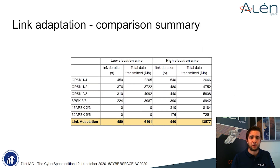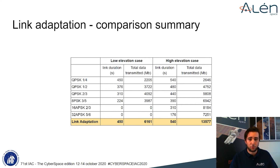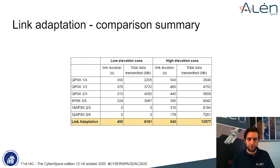This table summarizes the performance of the system with fixed modcode selection versus link adaptation. As you can see, for link duration and total data transmitted in both cases, the result of dynamic adjustment is beneficial.